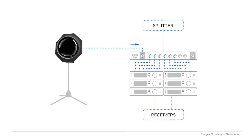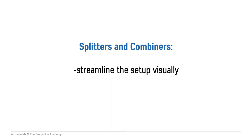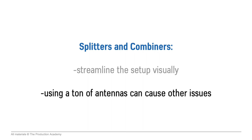If we have something like six wireless mics on stage, using an antenna splitter will let us use one antenna or one set of antennas for all six receivers. And in the opposite direction, we can use an antenna combiner to transmit a bunch of signals through a single antenna, like a helical, like we often do with IEMs. Not only does this streamline the setup visually, but using a ton of antennas right next to each other can cause some other issues.